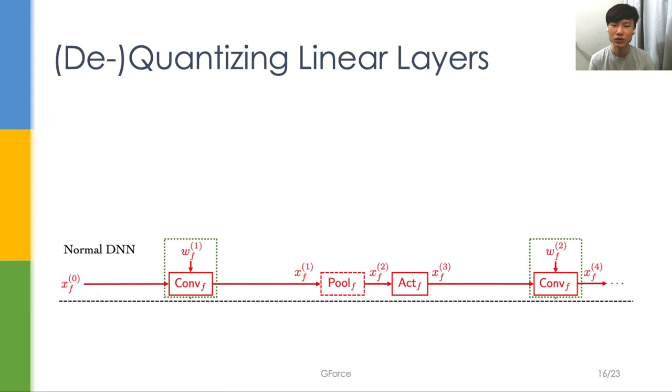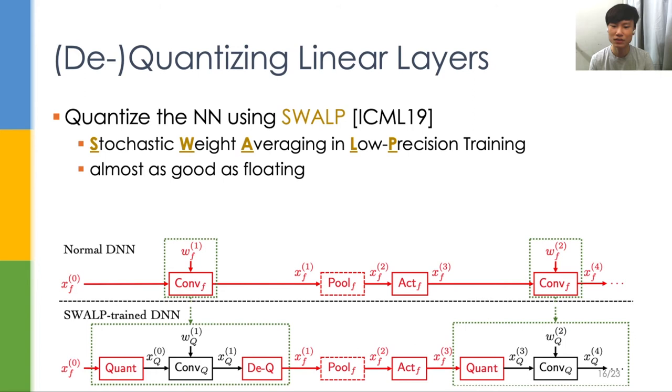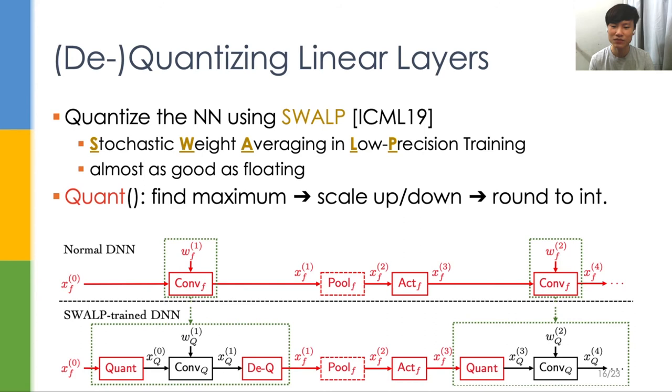In GeForce, we adopt SWALP for quantizing neural networks. Intuitively speaking, SWALP can maintain high accuracy because it trains the neural network with quantized values, so the model parameters are optimized for low bitwidth integers. In a SWALP-trained neural network, it quantizes the inputs to linear layers and dequantizes the outputs. Quantization needs to first find the maximum amount of all inputs, scale up or down the values according to the maximum, and then round them up to integers.